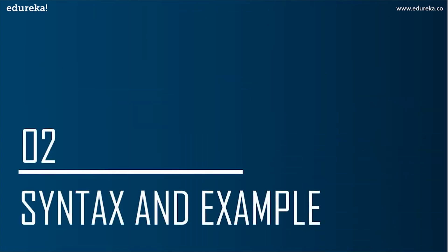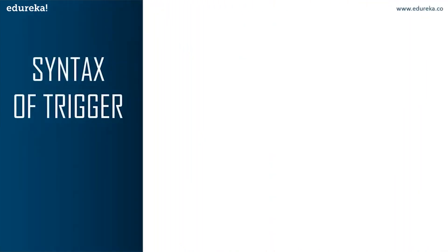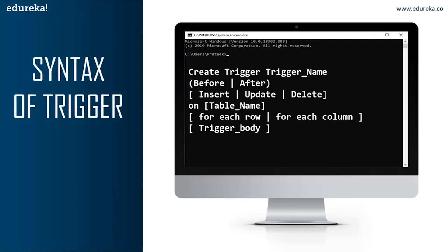Let's head to the next topic — syntax and example of a trigger. On the screen we can see the syntax of a trigger. Let me explain each part in detail. The first part is CREATE TRIGGER. These two keywords are used to specify that a trigger block is going to be declared. The next one is trigger name, which specifies the name of the trigger. The trigger name has to be unique and shouldn't repeat.